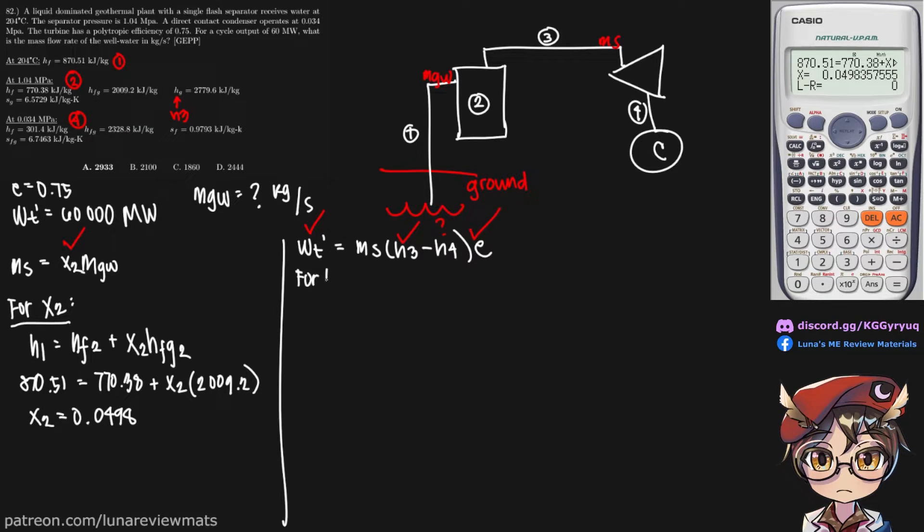So for H sub 4, we know that H sub 4 is equal to H_F4 plus X sub 4 H_FG4. So H sub 4 we do have right here. So that is simply 301.4. H_FG is also given right here 2328.8. So we just need to find our X sub 4. So since it looks like S sub 2 is equal to S sub 3. And if this is an isentropic process, that is also equal to S sub 4.